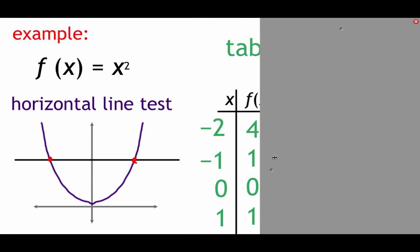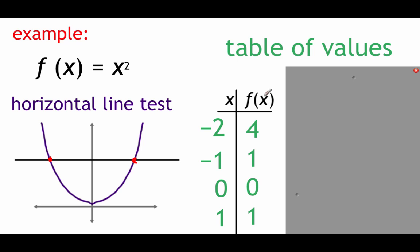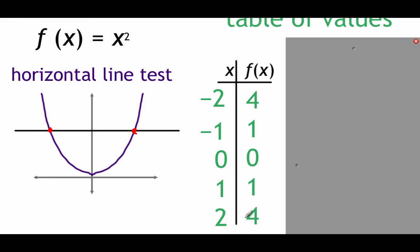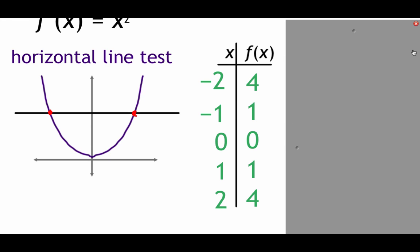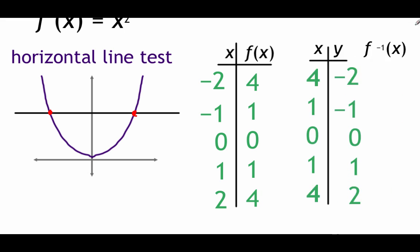Here's why the horizontal line test works. Looking at a table of values for f(x) = x²: plugging in -2 gives 4, -1 gives 1, 0 gives 0, 1 gives 1, and 2 gives 4. If we flip the x and y values to find the inverse, the x value of 4 maps to two different y values — negative two and two — which violates the definition of a function. So the inverse wouldn't exist.